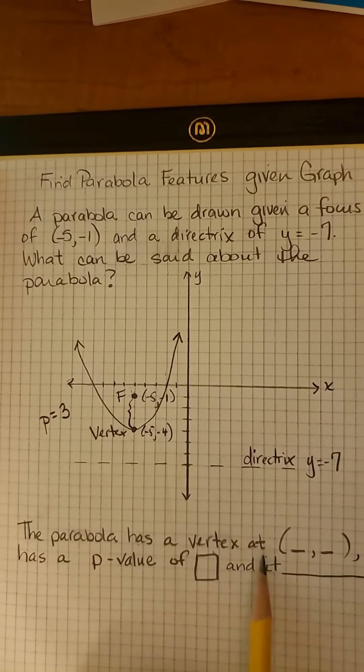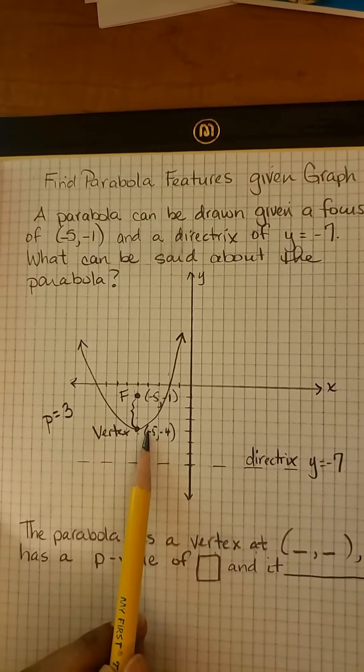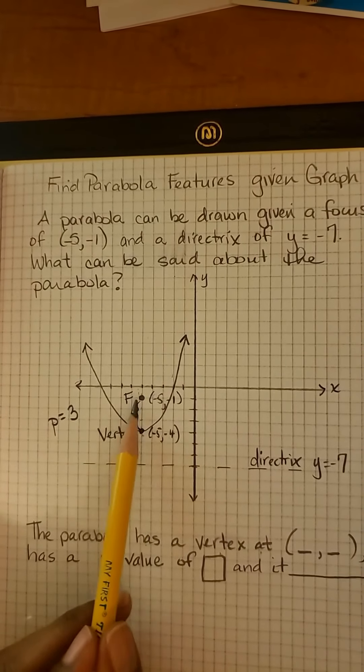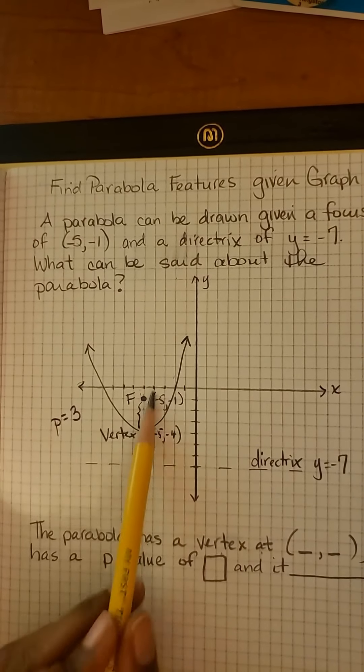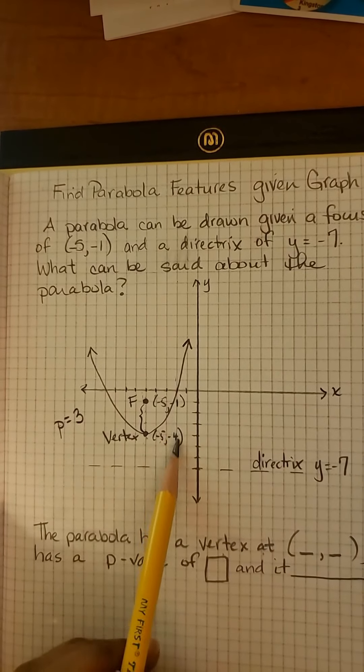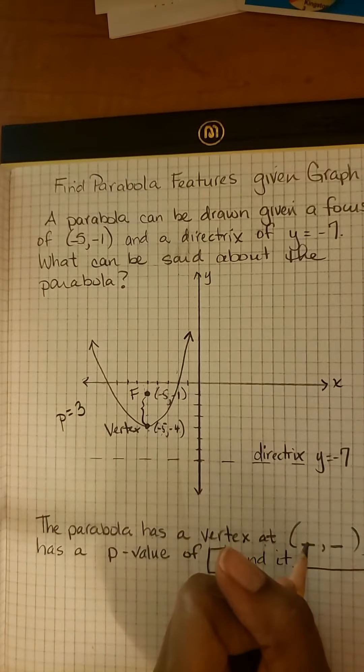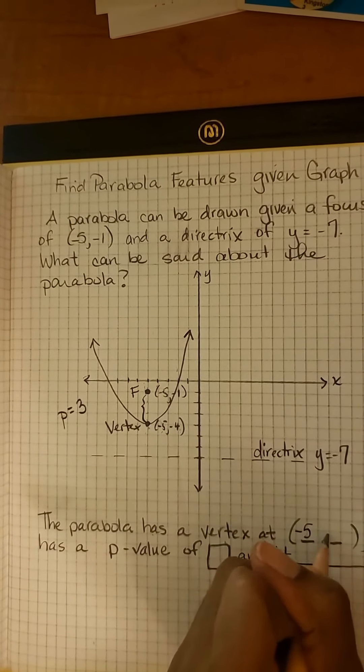The parabola has a vertex at (-5, -4). The x value of the focus and the vertex are going to be the same. The y value is going to be 3 more. So the vertex is (-5, -4).